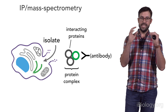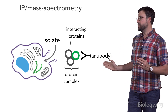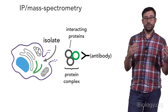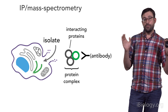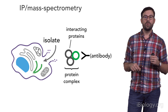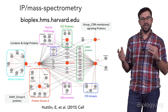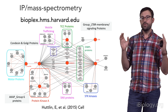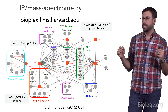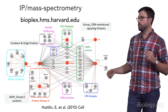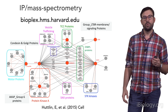In IP mass spec, we take cells, break them open, and go fishing for a protein of interest — usually using antibodies — and use mass spectrometry to identify which other proteins are coming along for the ride. A reference in this field is the BioPlex dataset by Steve Gigi, Wade Harper, and their colleagues at Harvard, who used overexpression of epitope-tagged proteins to profile the interactome of tens of thousands of targets. All of that data is available online.